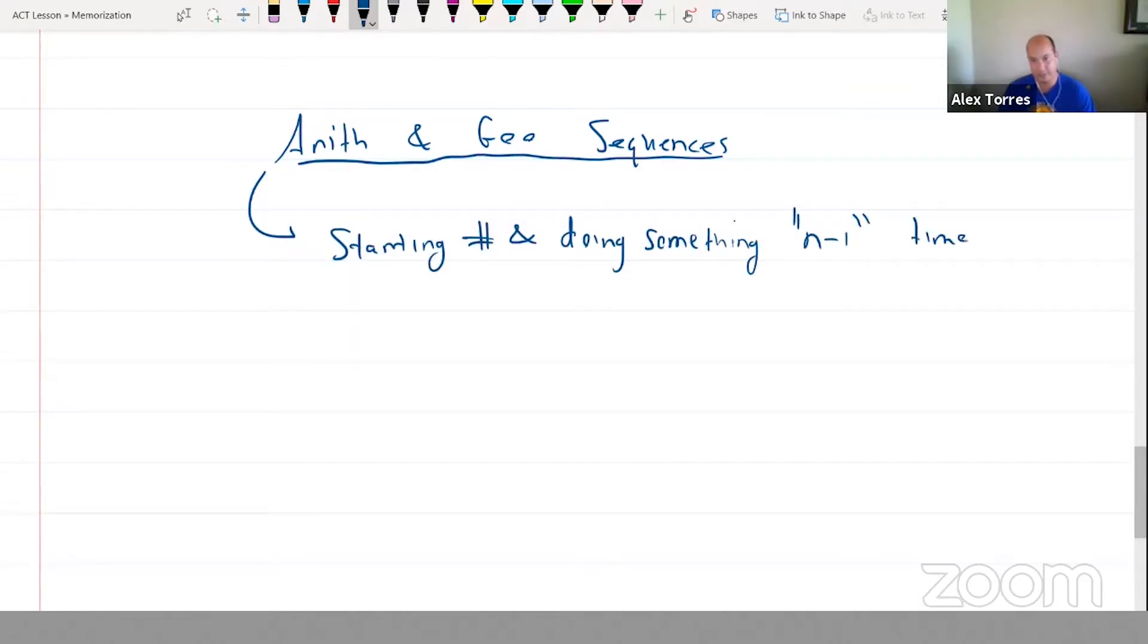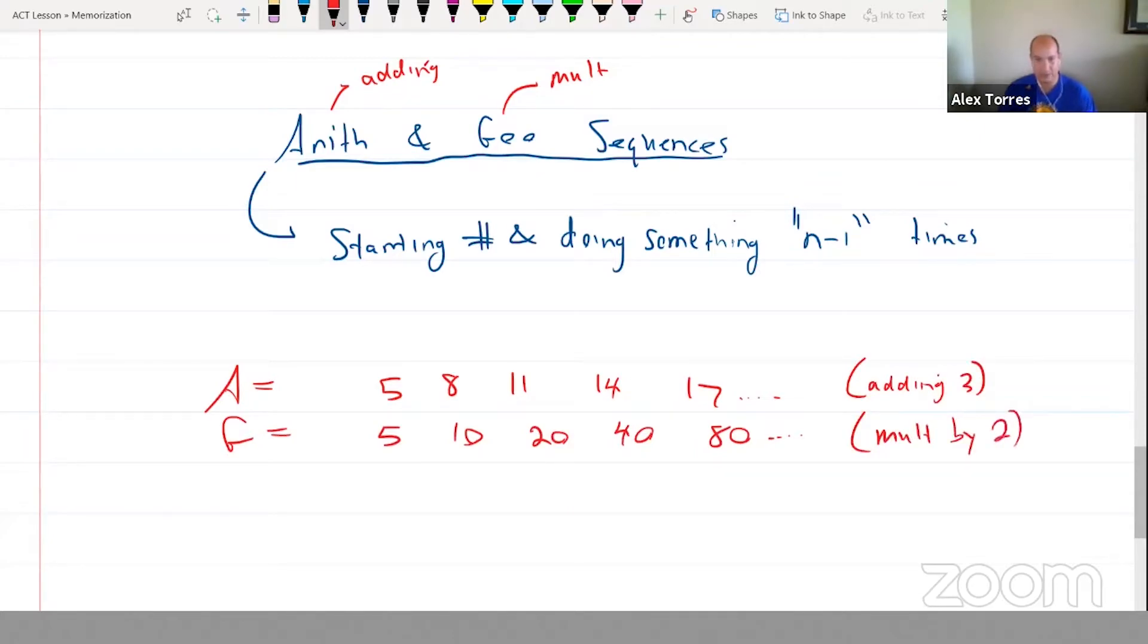Arithmetic sequences are where you're adding, geometric sequences are where you're multiplying. So an arithmetic sequence would be something like 5, 8, 11, 14, 17, and so on. A geometric sequence would be something like 5, 10, 20, 40, 80, and so on. So here we're adding 3, and here we are multiplying by 2.